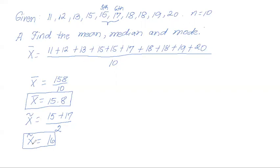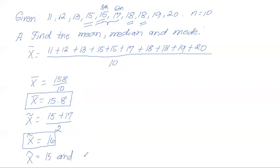And then finally for the mode, we just inspect our data set to find which values occurred the most. Here, 15 occurred two times and also 18. So 18 and 15 both occurred twice in the data set, meaning our data set is bimodal since we have two modes: 15 and 18.